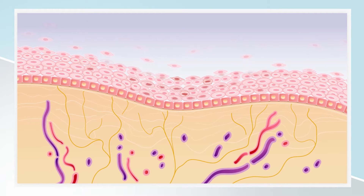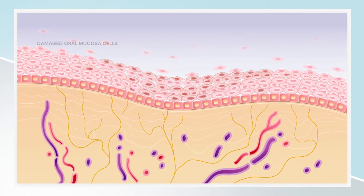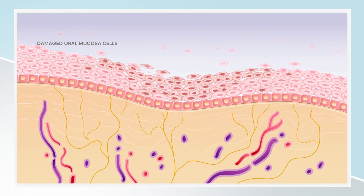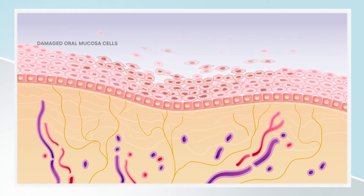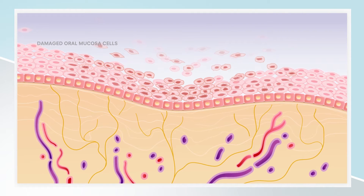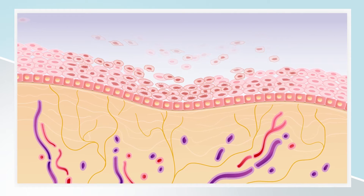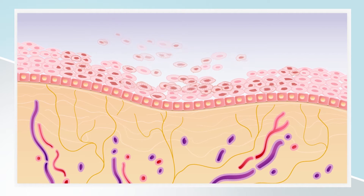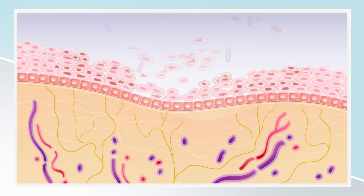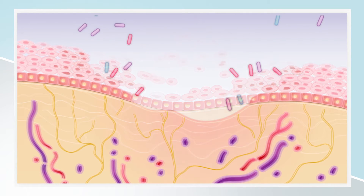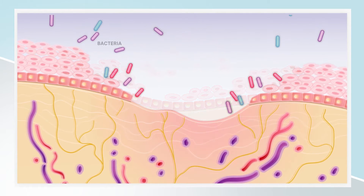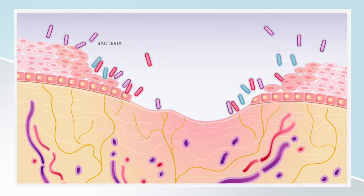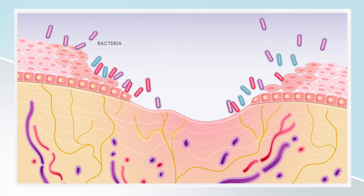Oral mucositis occurs when chemotherapy and radiation damage mucosal cells, negatively impacting their ability to divide and replace cells which need to be replaced. This results in loss of cell integrity, leaving the mucosal tissue open to ulceration and infection and exposing nerves. Common symptoms include pain, inflammation, and difficulty swallowing.